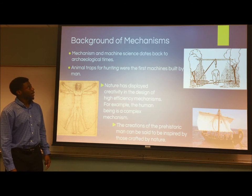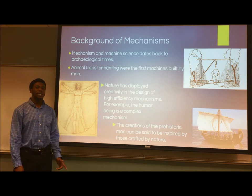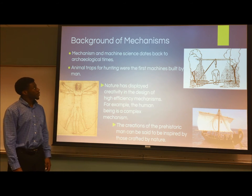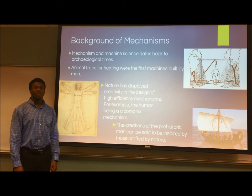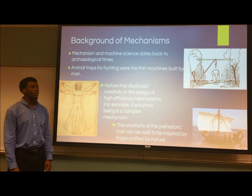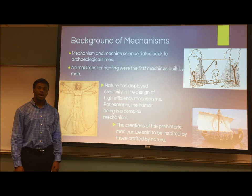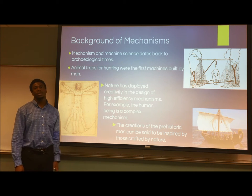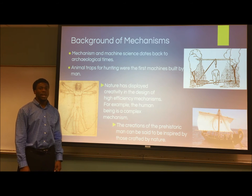Tracing back to ancient history, mechanism and machine science dates back to archaeological times. Some examples of these mechanisms can be found in the drawings and remnants discovered by archaeologists. Animal traps for hunting were one of the first machines built by man, followed by fire-starting machines that utilize rotational mechanisms to produce fire. The creations of prehistoric man can be said to be inspired by nature — one example being ships modeled in duck-like shapes to mimic the flowing capabilities of an actual duck.